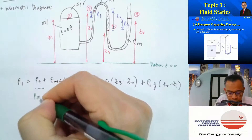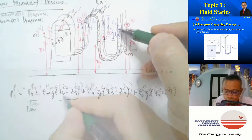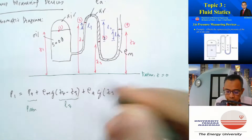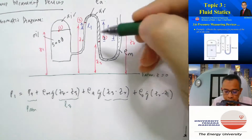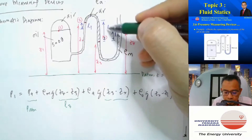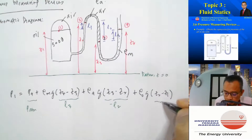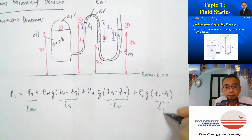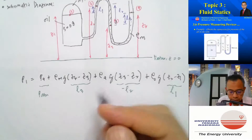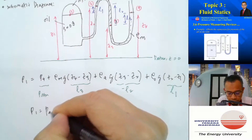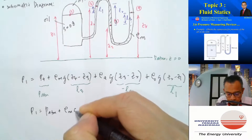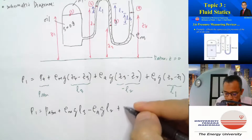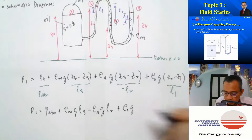p4 equals p_atm because it is open to atmosphere. z4 minus z3 equals l3 since z4 is greater than z3. z3 minus z2 equals negative l2 since z3 is shorter than z2. z2 minus z1 equals l1 since z2 is higher than z1. So we can write p1 equals p_atm plus rho_m × g × l3 minus rho_a × g × l2 plus rho_oil × g × l1.